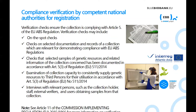Compliance verification by competent national authorities for registration includes verification checks to ensure the collection is complying with Article 5 of the EU ABS regulation. Verification checks may include: on-the-spot checks; checks on selected documentation and records of a collection which are relevant for demonstrating compliance with EU ABS regulations; checks that selected samples of genetic resources and related information of the collection have been documented in accordance with Article 5 of the ABS regulation; examination of collection capacity to consistently supply genetic resources to third parties for their utilisation in accordance with Article 5 of the regulation; and interviews with relevant persons such as the collection holder, staff, external verifiers, and users obtaining samples from that collection. Article 11 of the Commission implementing regulation has more information on verification and checks.